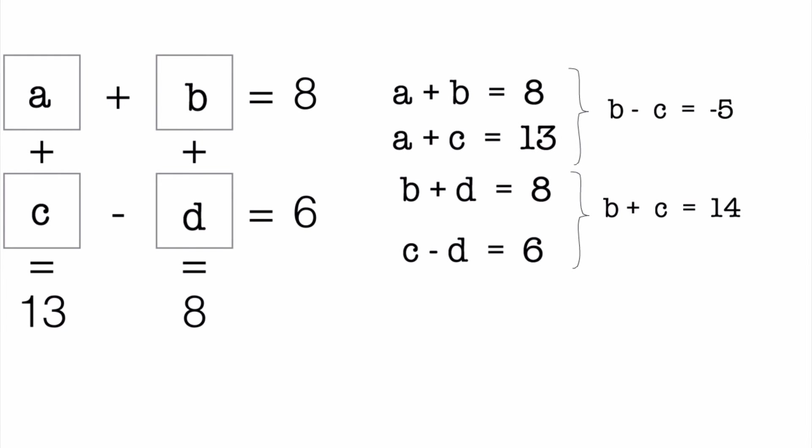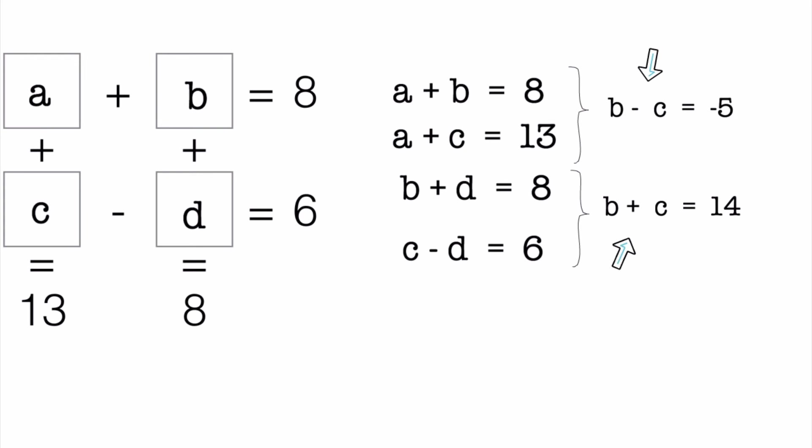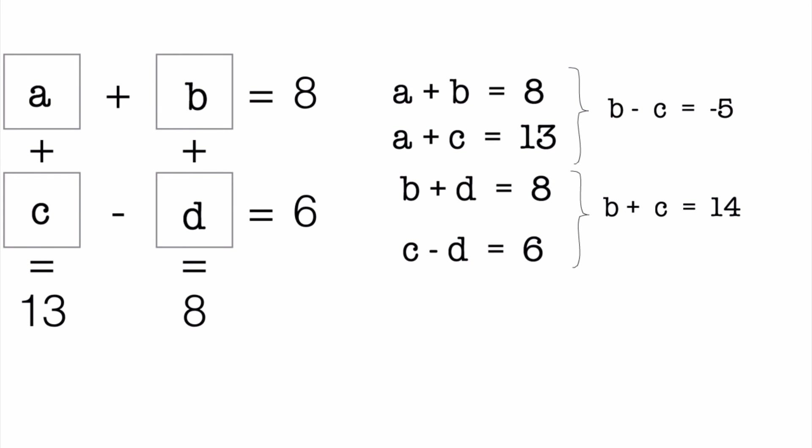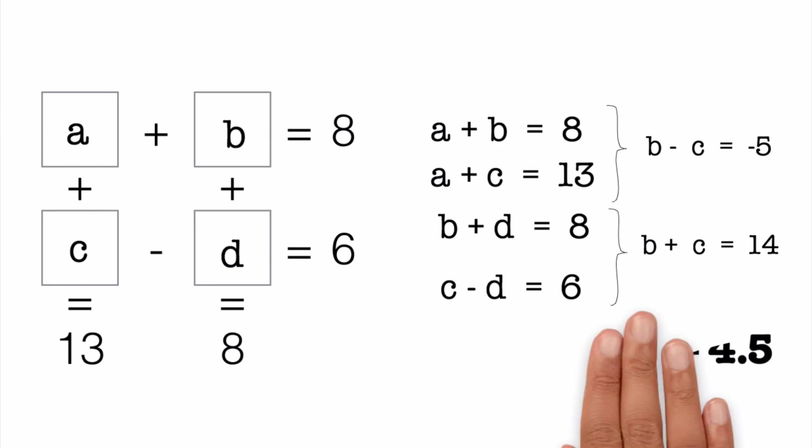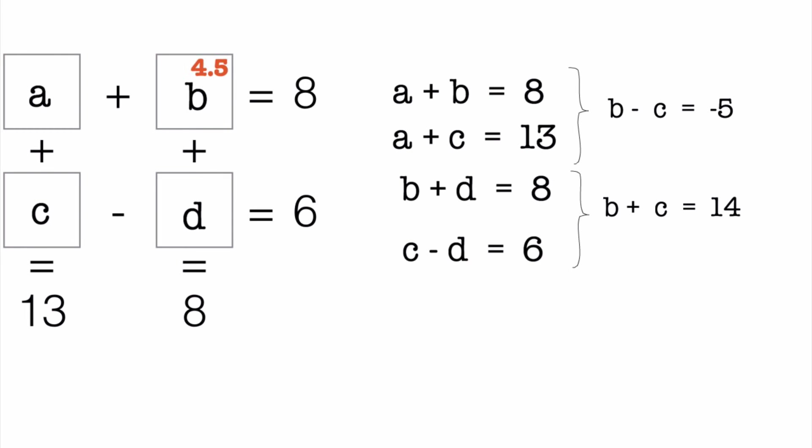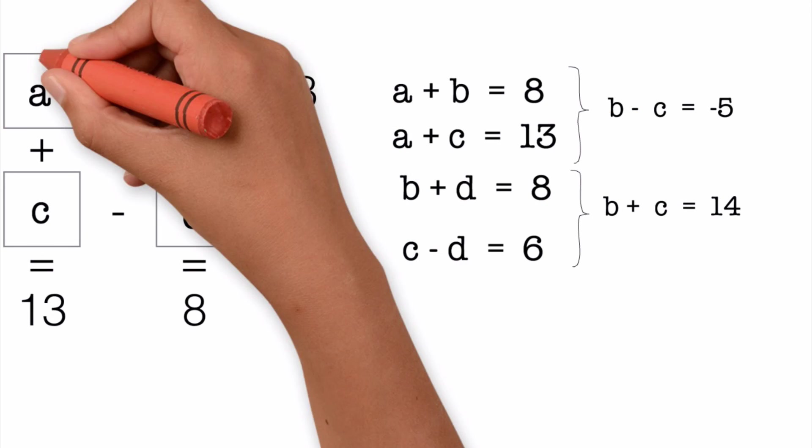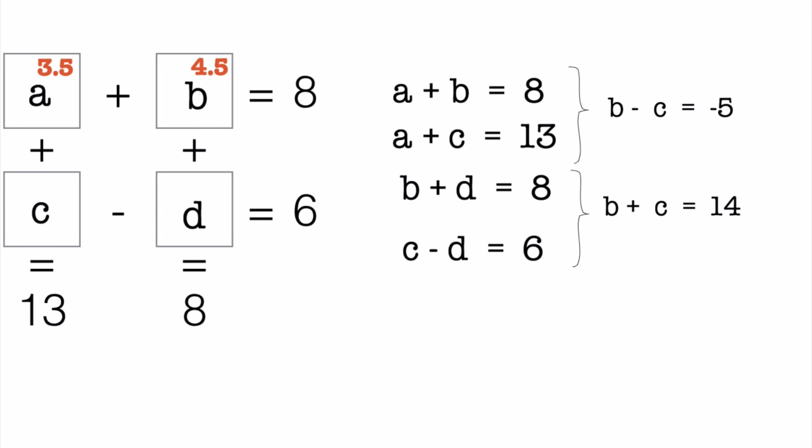And again, since we have these fantastic equations, we look at these two equations and add both sides which gives us 2B is equal to 9, which means B is equal to 4.5. And now things just keep falling into place. Using this equation we can say A is equal to 3.5, and using this equation we can get D equals 3.5, and finally using this equation we get C equals 9.5.